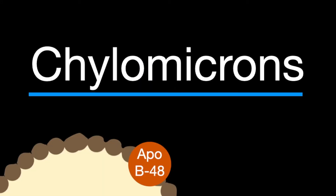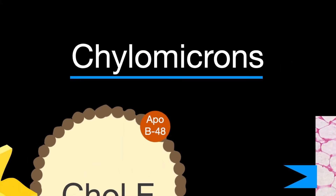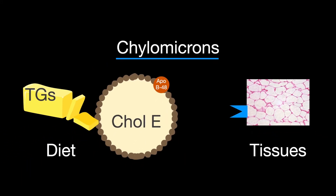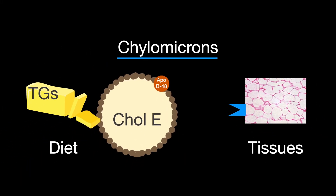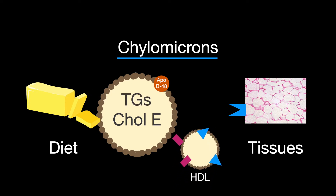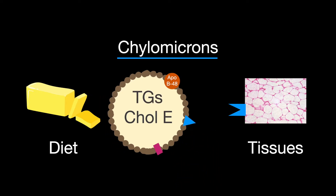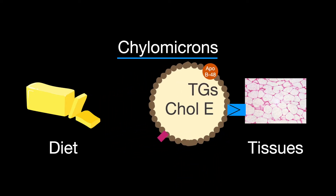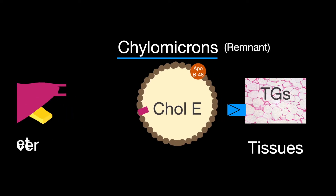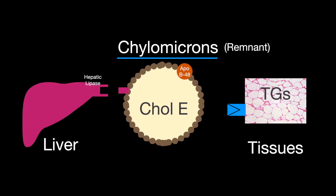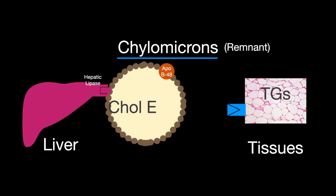Synthesized and secreted by the intestinal epithelial cells after a meal, chylomicrons transport triglycerides from the diet to the tissues. The remnant chylomicrons transport the remaining cholesterol to the liver.